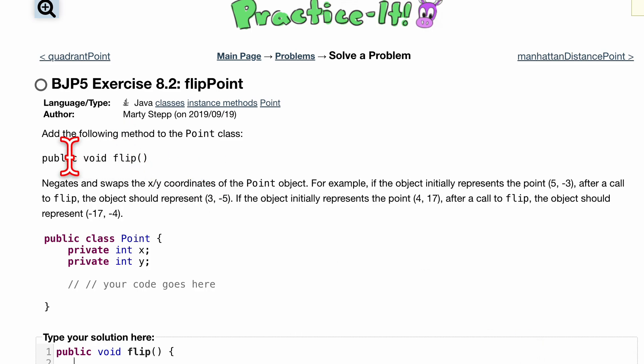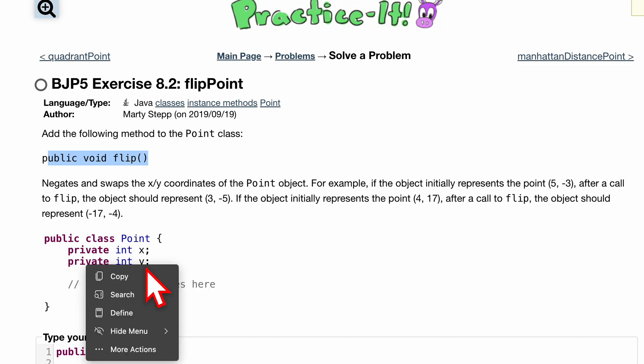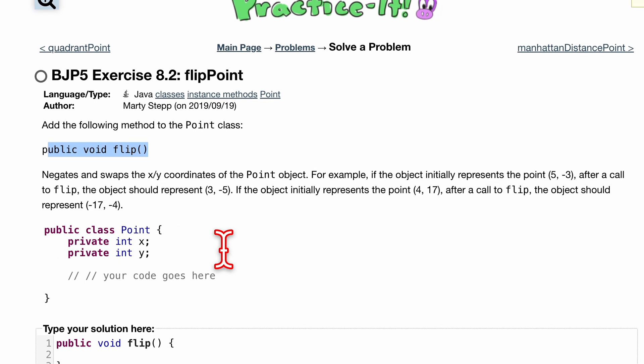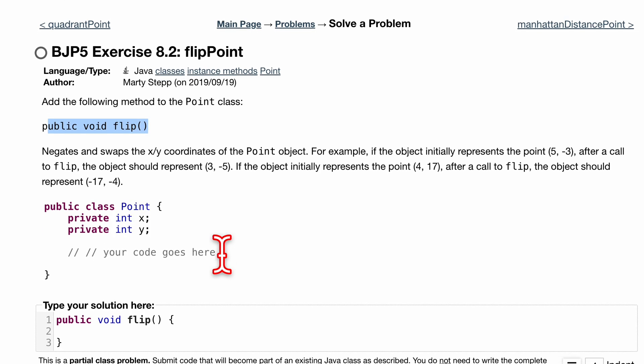For the FlipPoint practice problem, we want to add a method to our Point class. We've gone over similar stuff before—we have a class with these private fields. If you have questions, you can leave them in the comments or look in the playlist in the description. I've copied this method header down here: public void flip(). If you read the instructions, what we want to do is